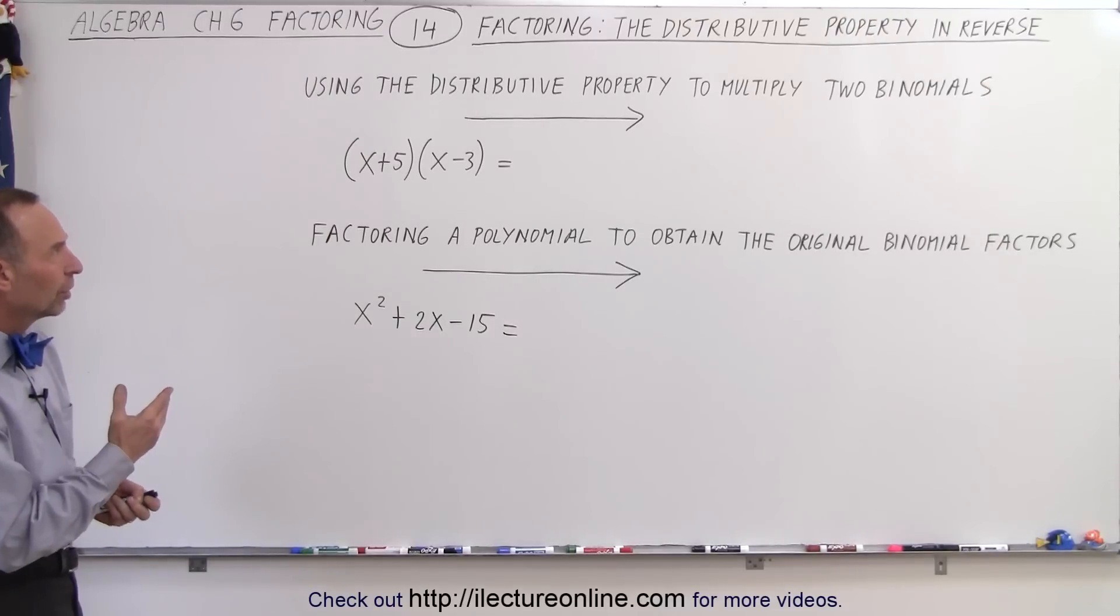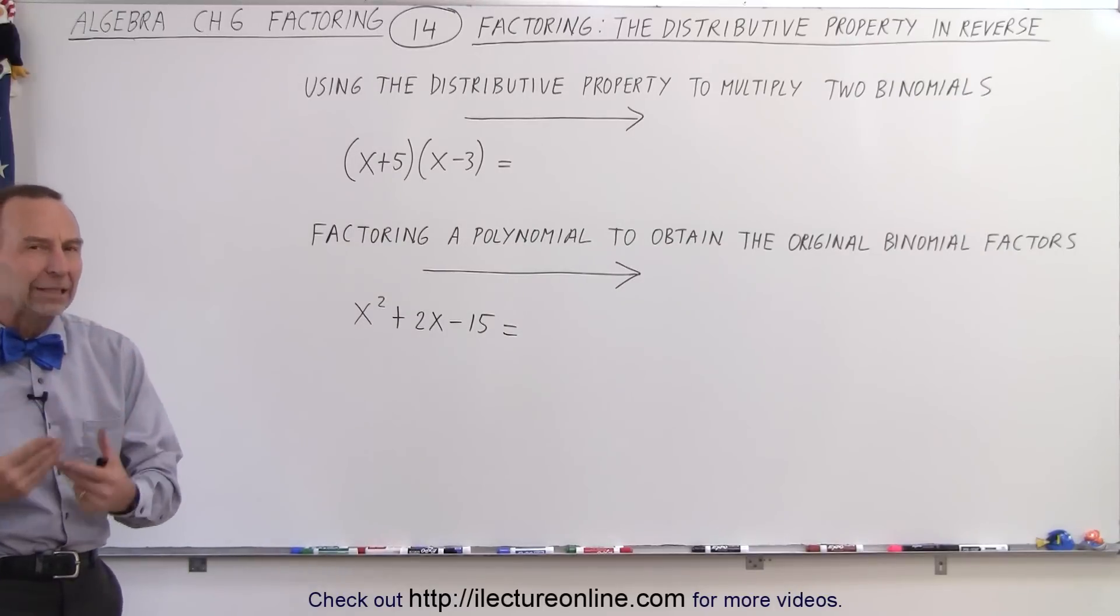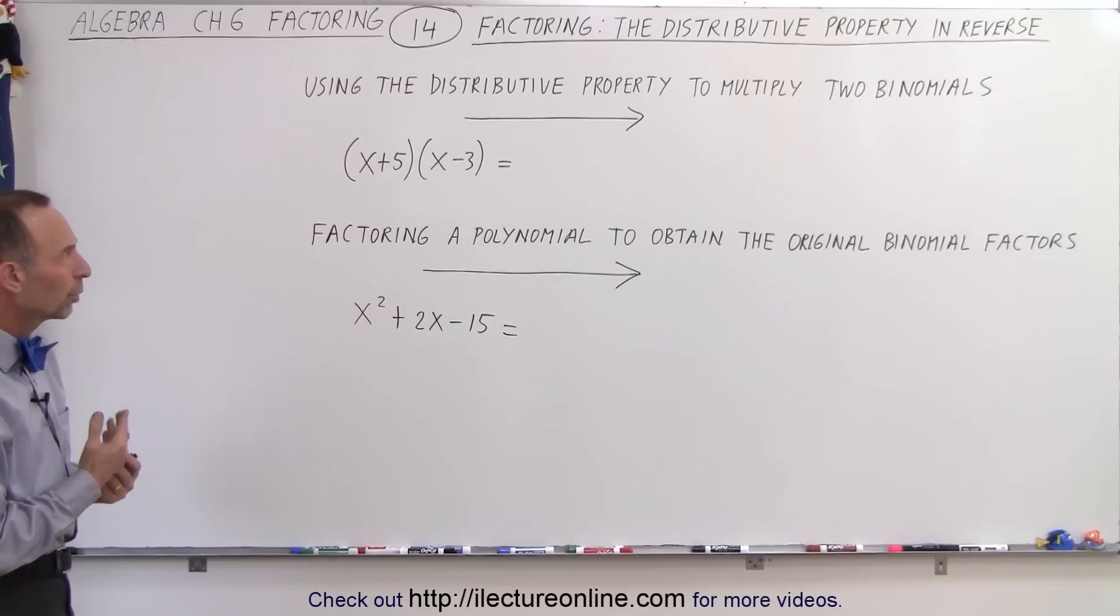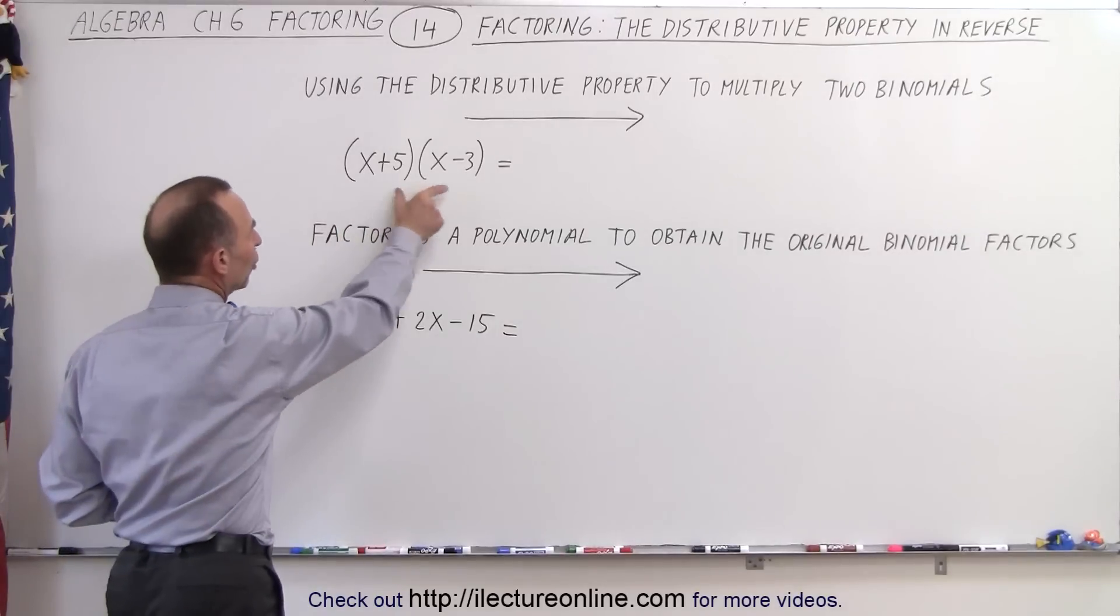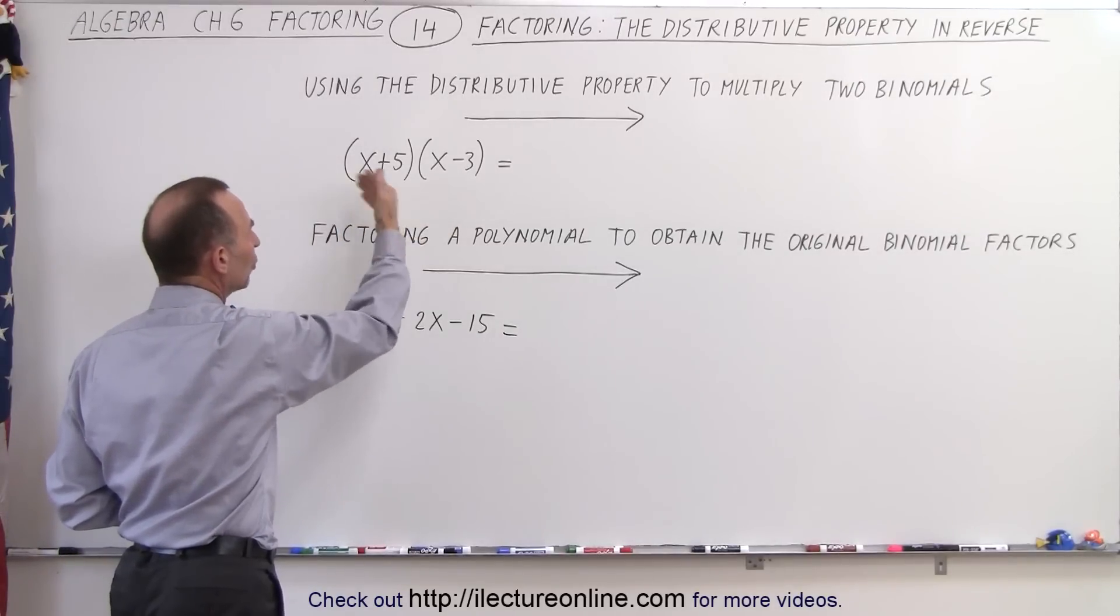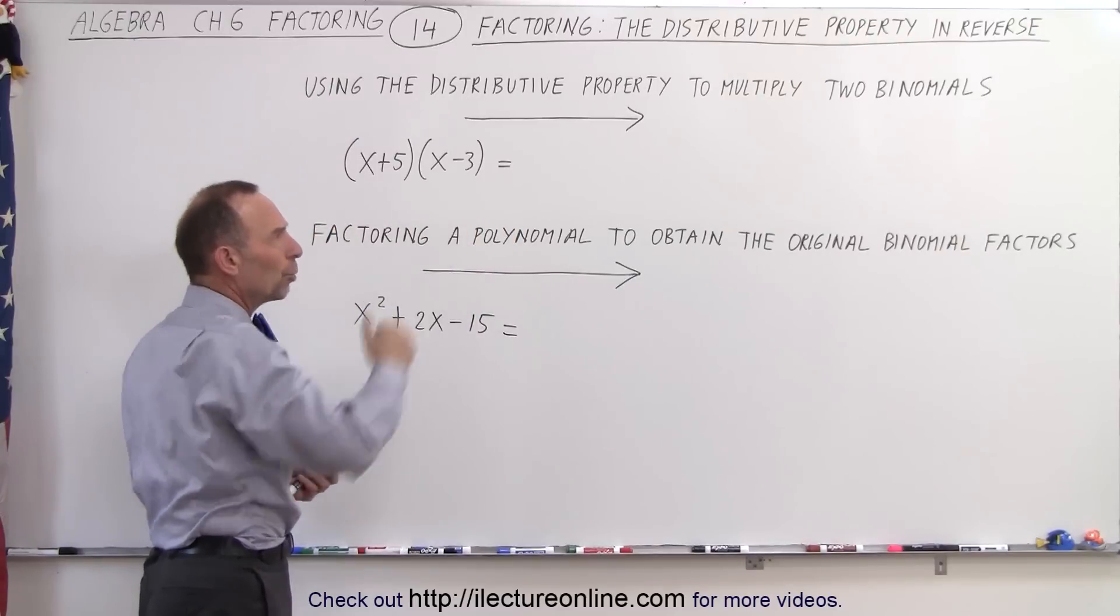First of all, we want to define factoring as being the inverse of applying the distributive property. In other words, if you take two binomials and you multiply them together using the distributive property, you'll get a trinomial.